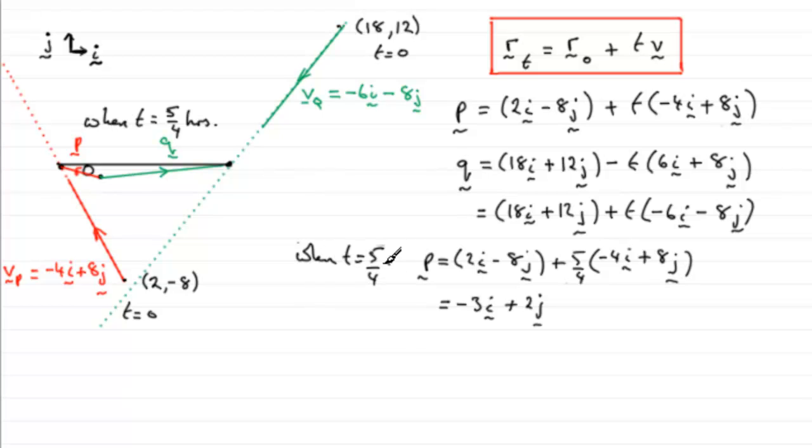And when T equals five upon four, what do we get for Q? Well again, if we just substitute our values in here, let's just put it in the bottom one here. We've got 18I plus 12J plus five upon four multiplied by minus 6I minus 8J.